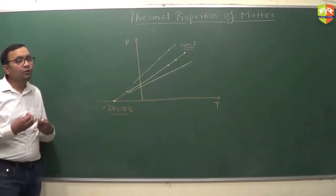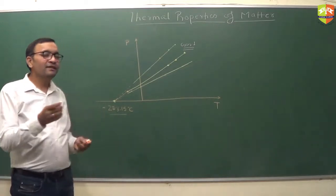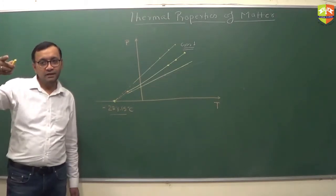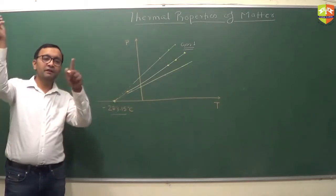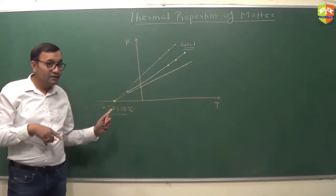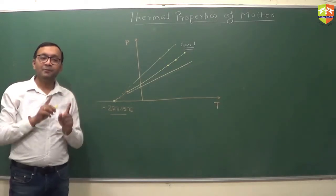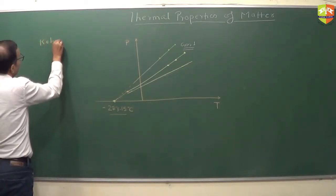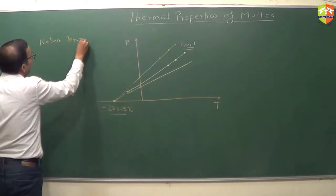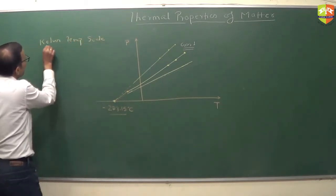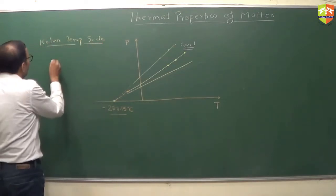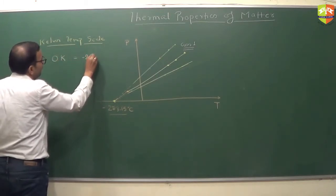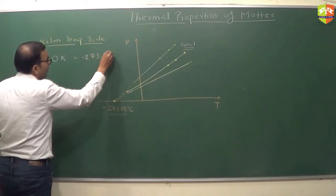There comes a new scale, which is an absolute scale. Since it is an absolute scale, we don't call it 'degree' — degree is a relative term, like degree Celsius or degree Fahrenheit, which are relative comparisons with some substance. Kelvin is not a comparison; it's an absolute scale. The Kelvin temperature scale is defined such that zero Kelvin is actually minus 273.15 degrees Celsius.